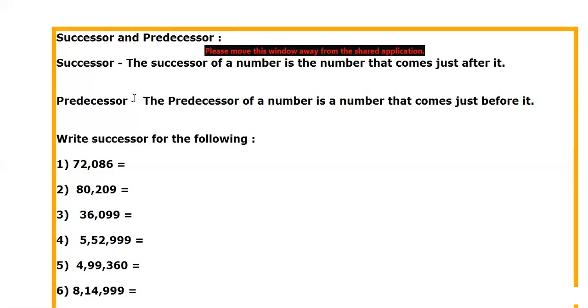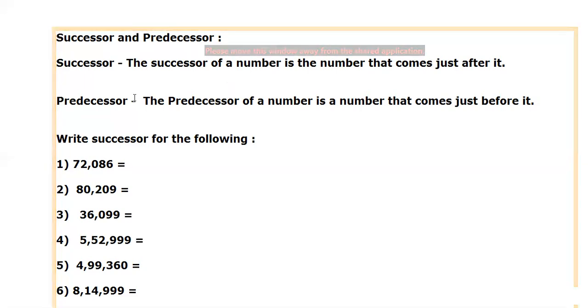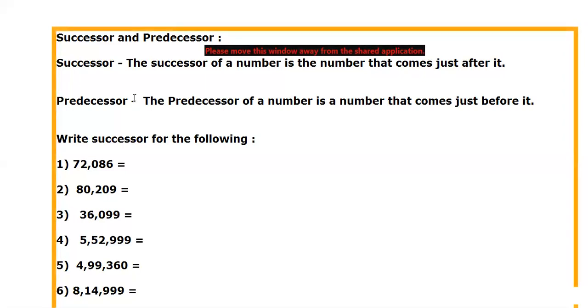Then what is predecessor? It is simply opposite to the successor, so you are going to write before number. The number which comes before that is called predecessor. Instead of using after number and before number, we are using the words successor and predecessor. Now we'll solve this with the help of some examples.